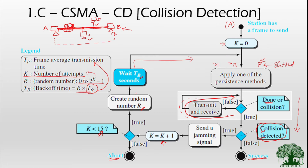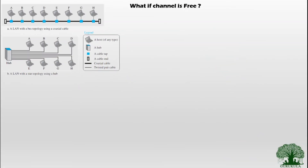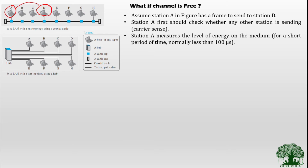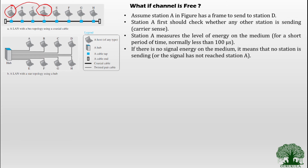Now let us understand this in a theoretical perspective, covering three cases. First: what if the channel is free? Assume node A wants to send its data to node D. Station A first checks whether any other station is sending — equivalent to sensing the carrier. Station A measures the energy level of the medium for a short period, approximately 100 microseconds. If there is no signal energy on the medium, it means no station is sending, so A interprets the medium as idle and starts sending its frame.